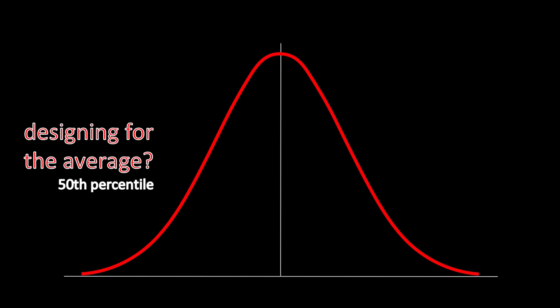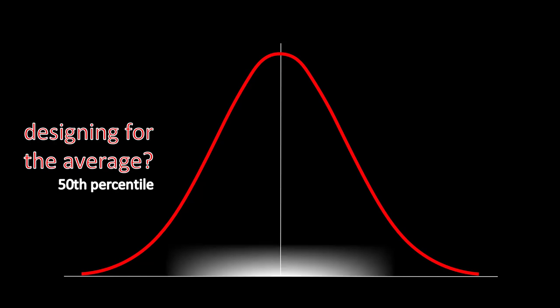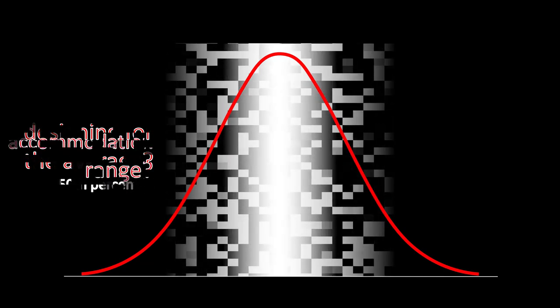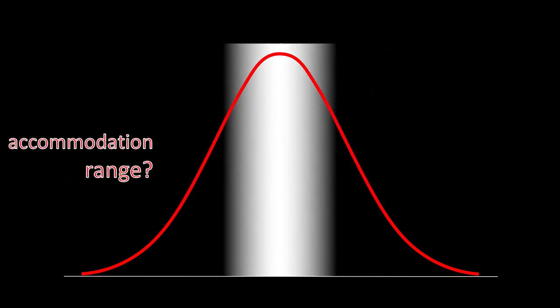We can add other lines to the normal curve to mark out other percentiles. In industrial design, we talk typically about the 10th and the 90th percentile, or the 5th and the 95th, or the 1st and the 99th. But who should we accommodate for? Who loses in these average ranges?